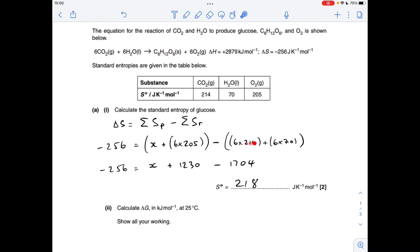So putting the numbers in gives us that, and then if we tidy it up, we get that, and then X, the entropy of glucose, comes out at 218 joules per Kelvin per mole.